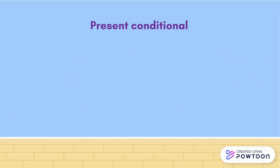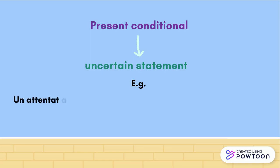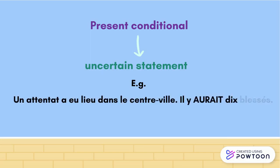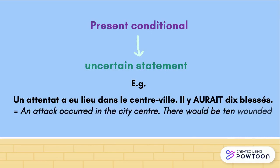The present conditional can also express an uncertain statement. For instance: 'Un attentat a eu lieu dans le centre-ville, il y aurait dix blessés.' An attack occurred in the city centre, there would be ten wounded people.